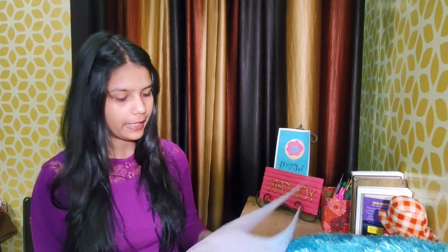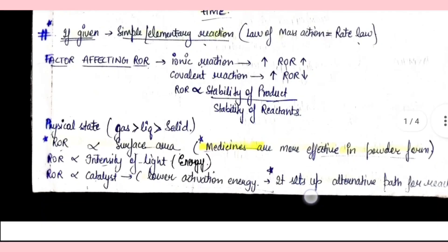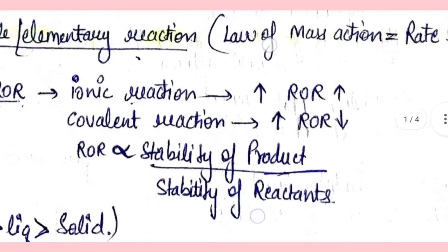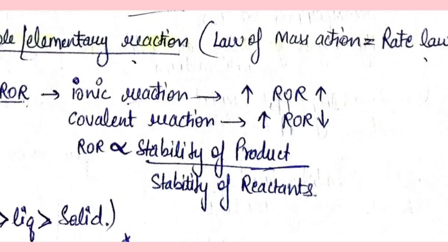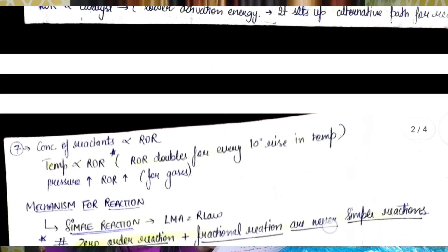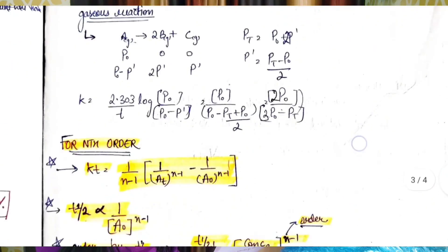Instead of writing the whole sentence — because for that you already have your textbooks — in the formula sheet you want the information to be precise and concise. For example, this formula sheet of chemical kinetics which I made: there is not even one complete sentence. All the lines I have written are very short and to the point. For example, 'factors affecting rate of reaction' — in the theory you will find complete lengthy paragraphs, but here I've just written the key points, like when ionic reaction increases, rate of reaction increases; covalent reaction increases, rate of reaction decreases. There is no complete explanation because I have already studied the explanation from the theory books. Here I just want a summarized form of that information.